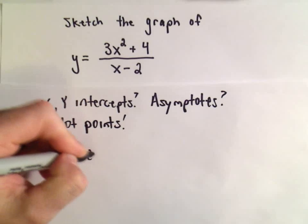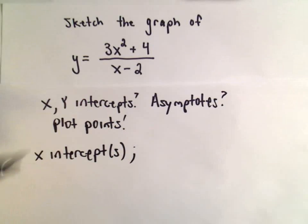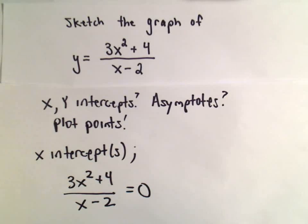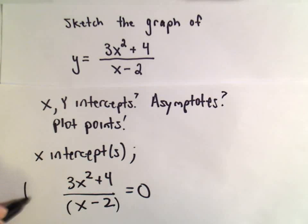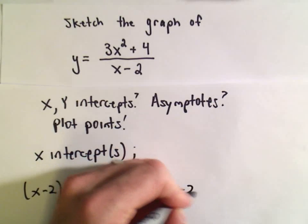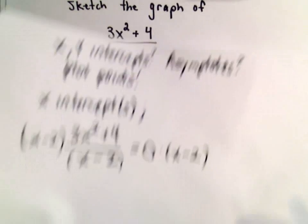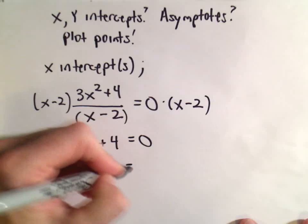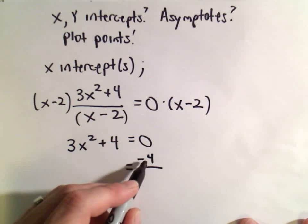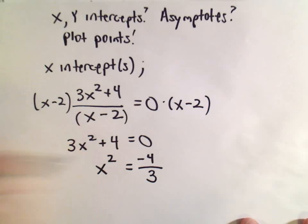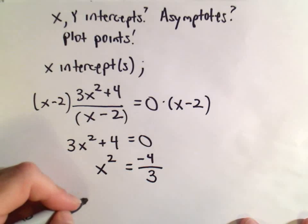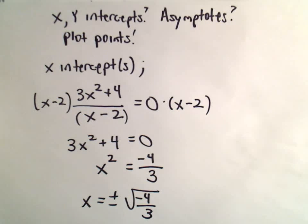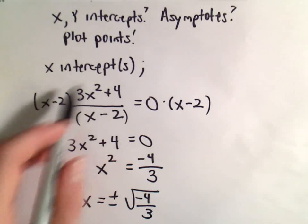For x-intercepts, we take our function (3x² + 4) / (x - 2) and set it equal to 0. Multiplying both sides by (x - 2) leaves us with 3x² + 4 = 0. Subtracting 4 gives 3x² = -4, so x² = -4/3. Taking the square root gives a complex or imaginary number, which tells us there are no x-intercepts for this function.